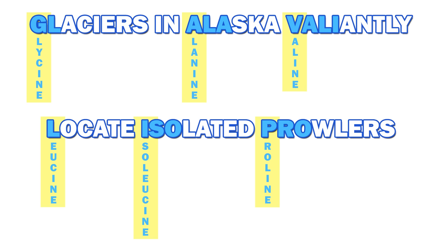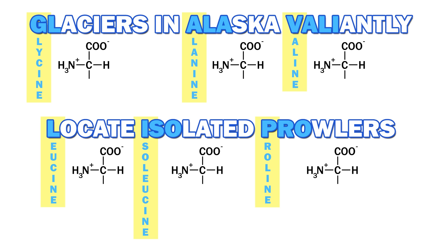Let's start with glycine. This is the simplest amino acid and the only nonchiral one. A chiral carbon is attached to four different groups. Glycine is attached to two hydrogens, since its R group — the group that changes among the 20 amino acids — is a hydrogen.